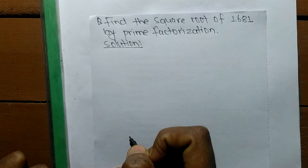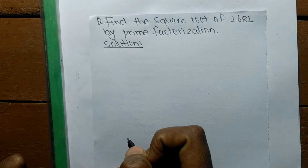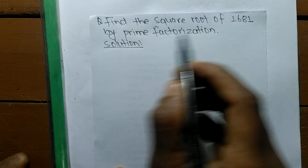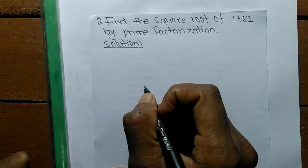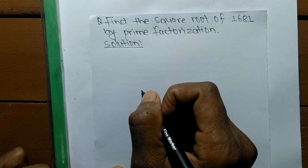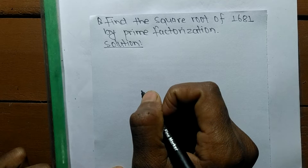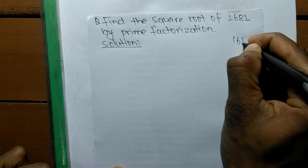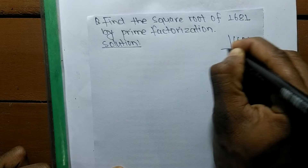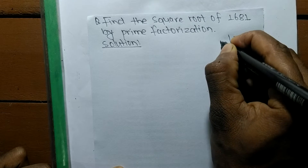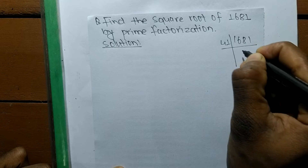Today we shall learn to find the square root of 1681 by prime factorization method. To find a square root by prime factorization, first we have to find out the prime factors of the given number. The prime factors of 1681 are 41 times 41.